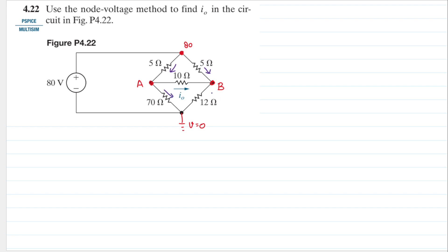Let's assume the direction of the current: this one is going like that, this one is going like that, this one is going like that, and this one is going like that. Let's do KCL at node A. KCL says that the sum of the currents going in will equal the sum of the currents going out. The only current going into node A is from the 80-volt node.